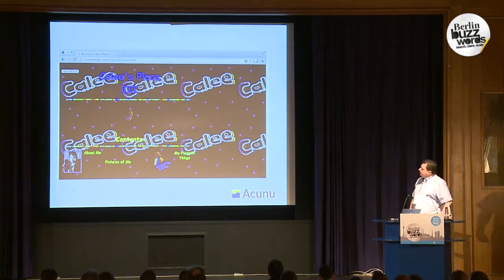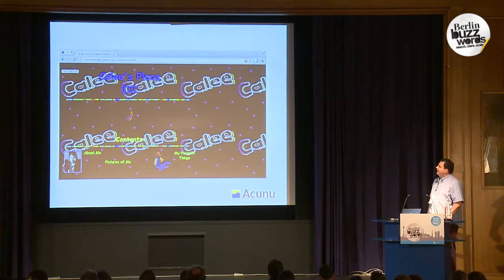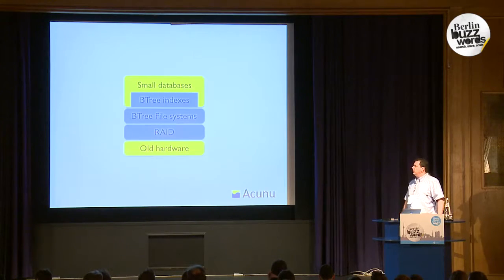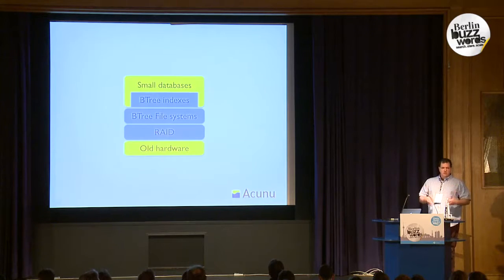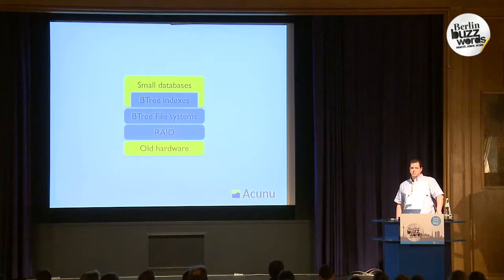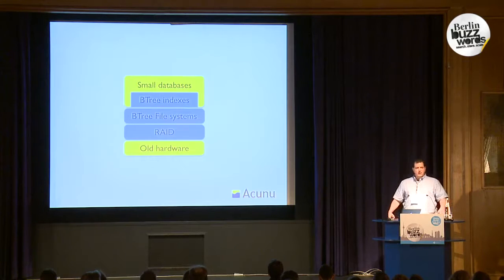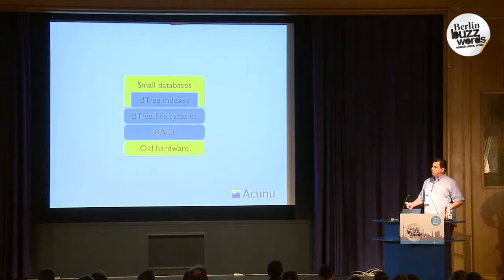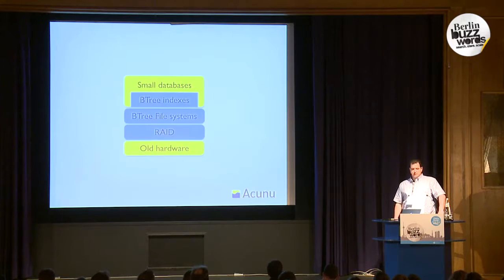And the internet looked something like this — or some of it did. It was all static HTML documents. And so our databases would have looked something like this. We had relatively small databases — hundreds of megs; a one or two gig database would have seemed huge at the time. They would have been indexed with B-trees, and would have persisted data to disk as files on a B-tree indexed file system. We probably would have used RAID for redundancy so we didn't lose our application in the event of a disk failure.